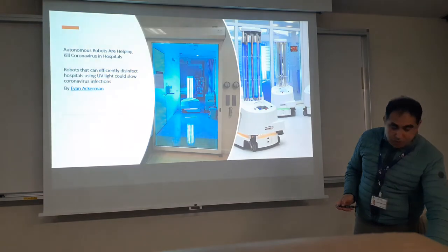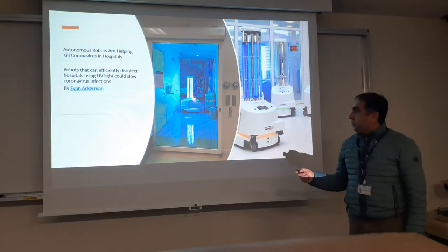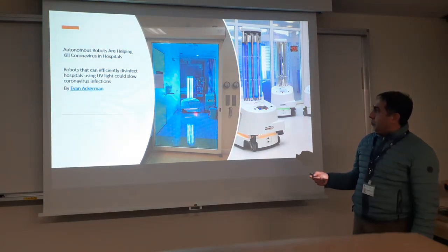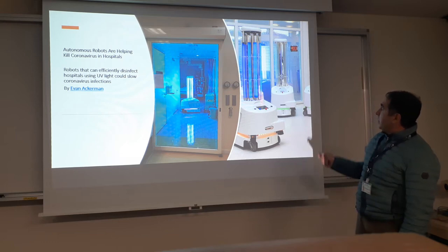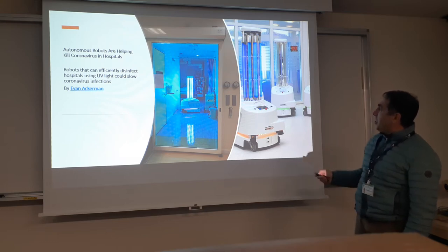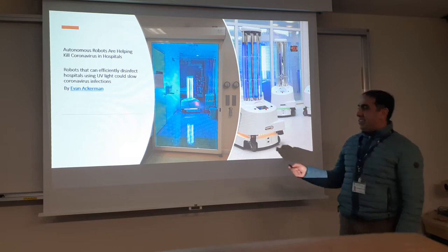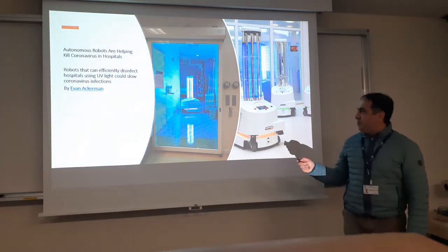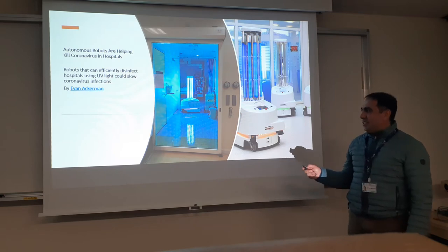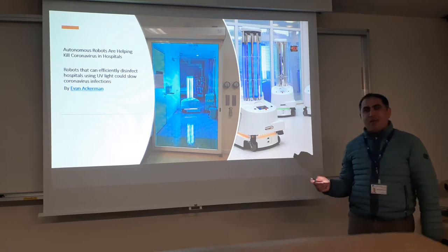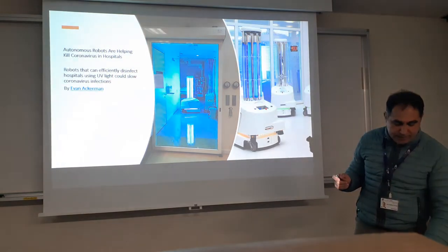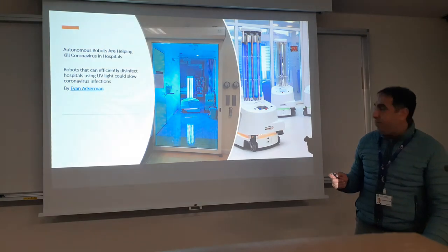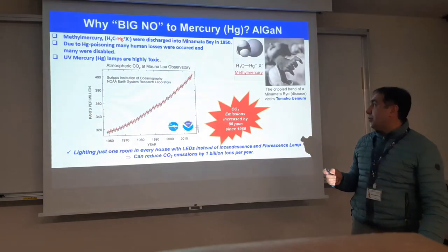Most importantly, there is this autonomous robot which can clean the areas in the hospital. This is the structure, but you can see the size is very big, and it is based on the toxic mercury lamp. So we need a smart and small-size UV light source.